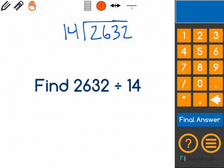My job is to find out how many times 14 fits into 2,632. I'm going to start by looking at the number 26 and thinking about how many times 14 fits into 26. One group of 14 is 14. Two groups is 28.